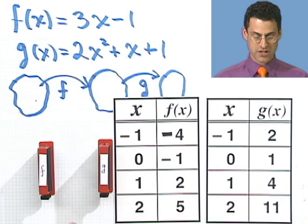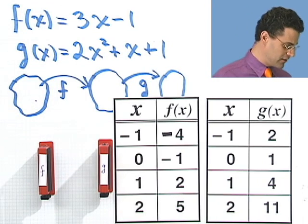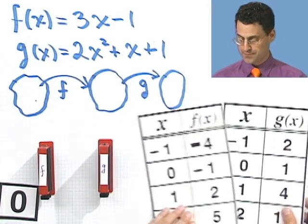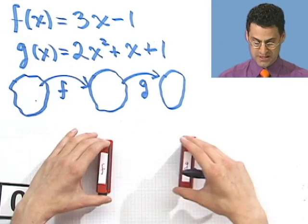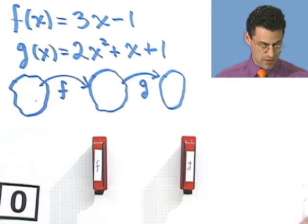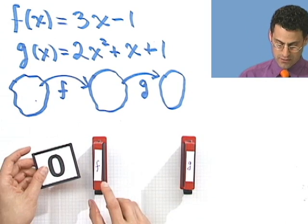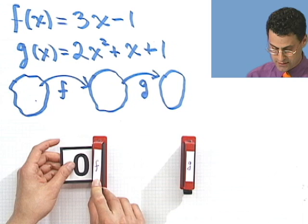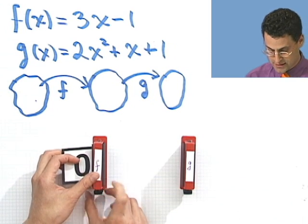So I have an f machine and a g machine. The first thing I'm going to do is take the 0. And I'm going to take the 0 and put it through the f machine. Now what should happen? Well, we should see the value of the function when I evaluate f at 0. So let's try that right now. So I put that in. Let's see what happens.